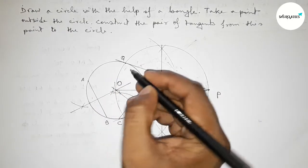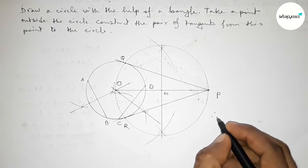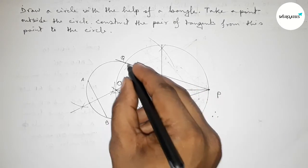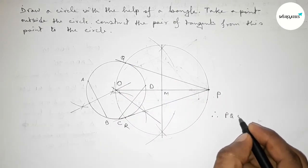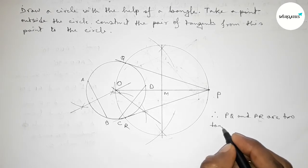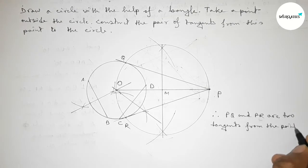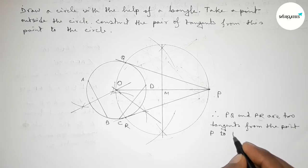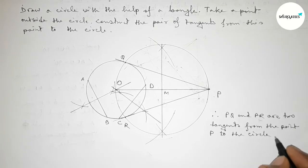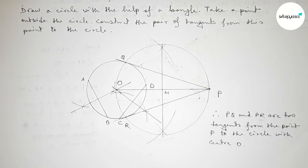Now joining P to the two intersection points — taking point Q here and point R here. Therefore PQ and PR are the two required tangents from point P to the circle with center O. That's all. Thanks for watching. If this video is helpful to you, please share it with your friends and please like, share, and comment. Thanks for watching.